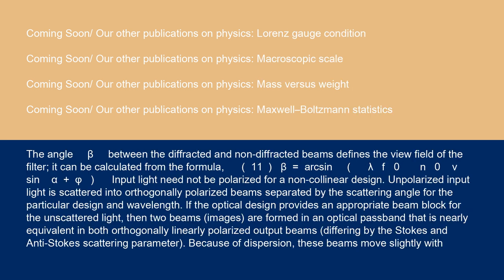The angle β between the diffracted and non-diffracted beams defines the view field of the filter. It can be calculated from Equation 11: β = arcsin(λf0/(n0·v)sin(α+φ)).